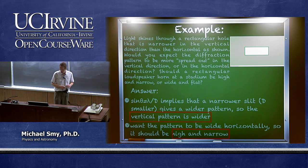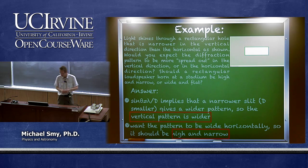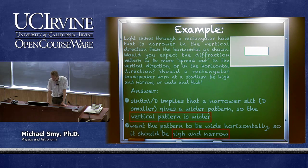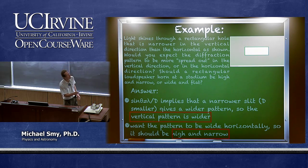For a loudspeaker horn at a stadium, we want the pattern to be as wide as possible so that everybody can hear it. Therefore we want a horn that is high and narrow — exactly the opposite of the picture shown — since the audience is distributed horizontally.